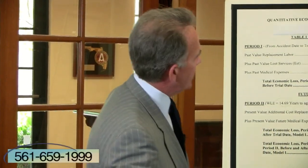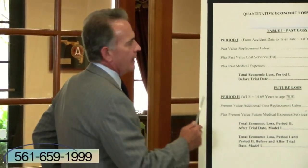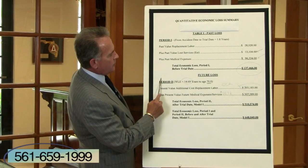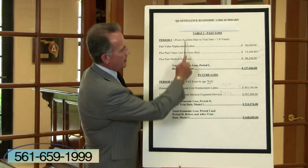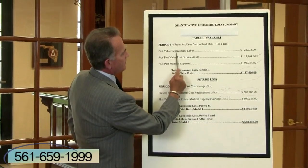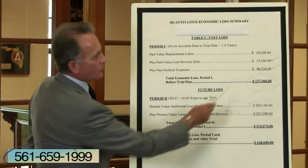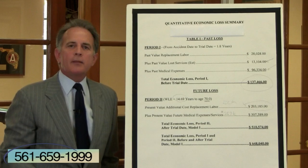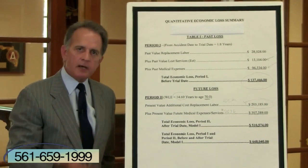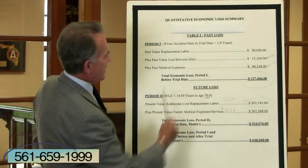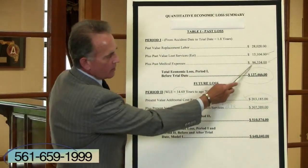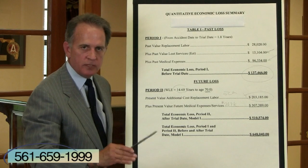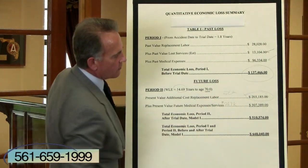This is a chart from a case that we did a little while ago, and it breaks down and shows you what the economist does. He has two periods: the period up to the trial and then the period after the trial — the future loss and the past loss. The past value of replacement labor was $28,000. The past value of loss services — because he could no longer do the work around the house that he used to, and his wife had to hire people to do that work — was $13,000. Past medical expenses were $96,000. So just in the past he had incurred economic losses of $137,466.